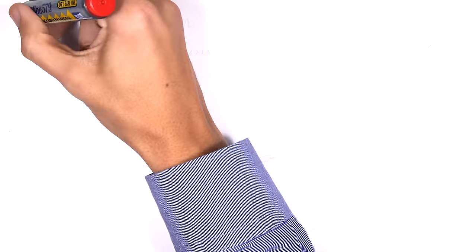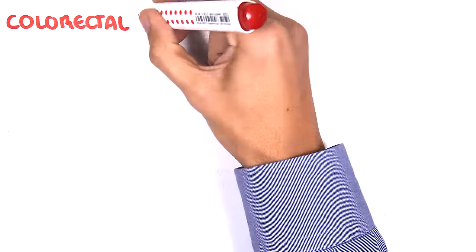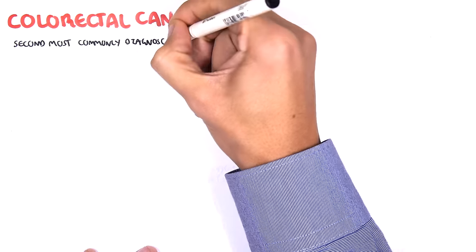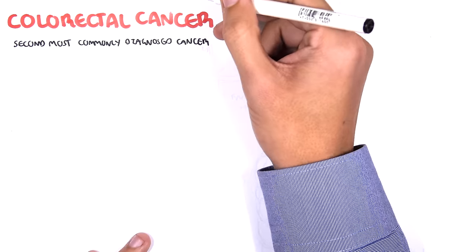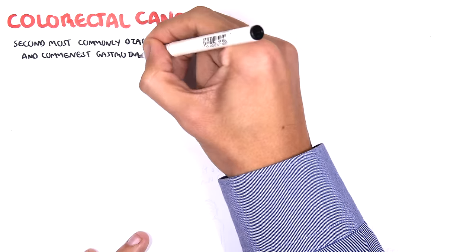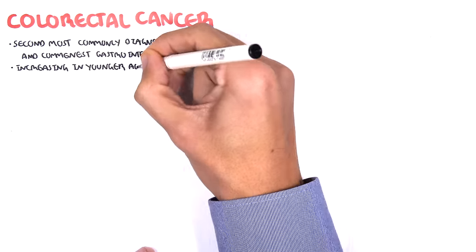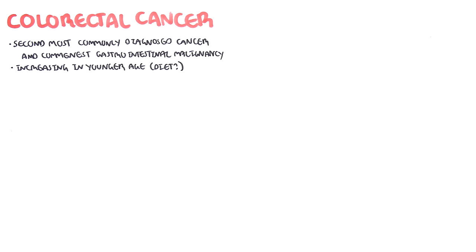In this video we're going to talk about colorectal cancer, this is an overview and introduction. Colorectal cancer is the second most commonly diagnosed cancer and is the commonest gastrointestinal malignancy. The prevalence of colorectal cancer is increasing in the younger population and this could be attributed to diet. This is also the same with diverticular disease.